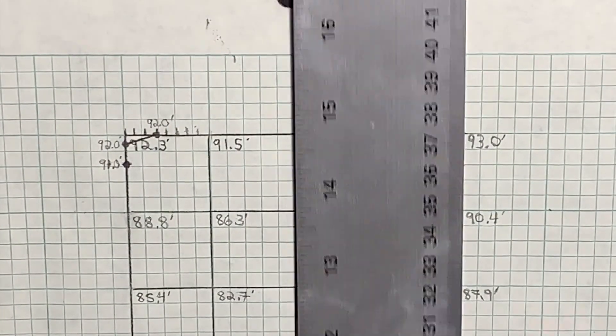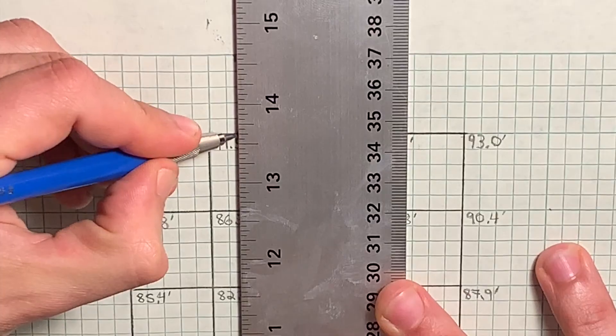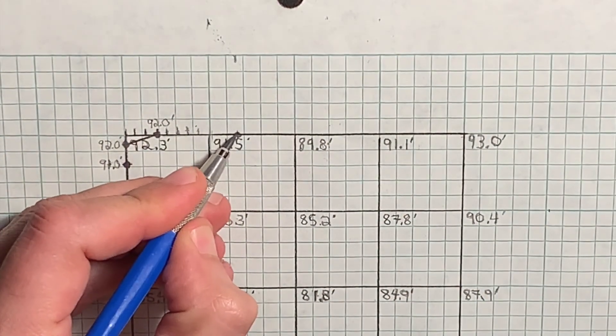That being done, I use a t-square to line up the scale measurement and transfer it down to the line.